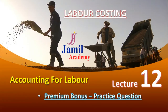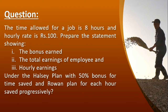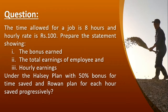Accounting for Labor, Lecture Number 12. Practical question: the last question. Time allowed for a job is 8 hours and the hourly rate is 100 rupees. Prepare the statement showing bonus earned, total earnings of the employee, and hourly earnings under the Halsey Plan with 50% bonus for time saved, and the Rowan Plan — for each hour saved progressively. Two methods.